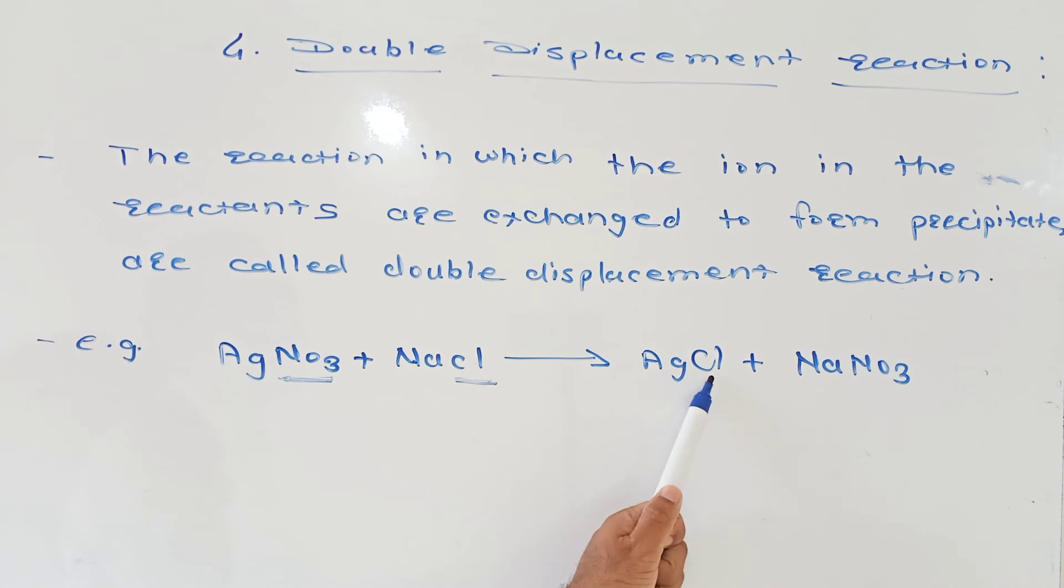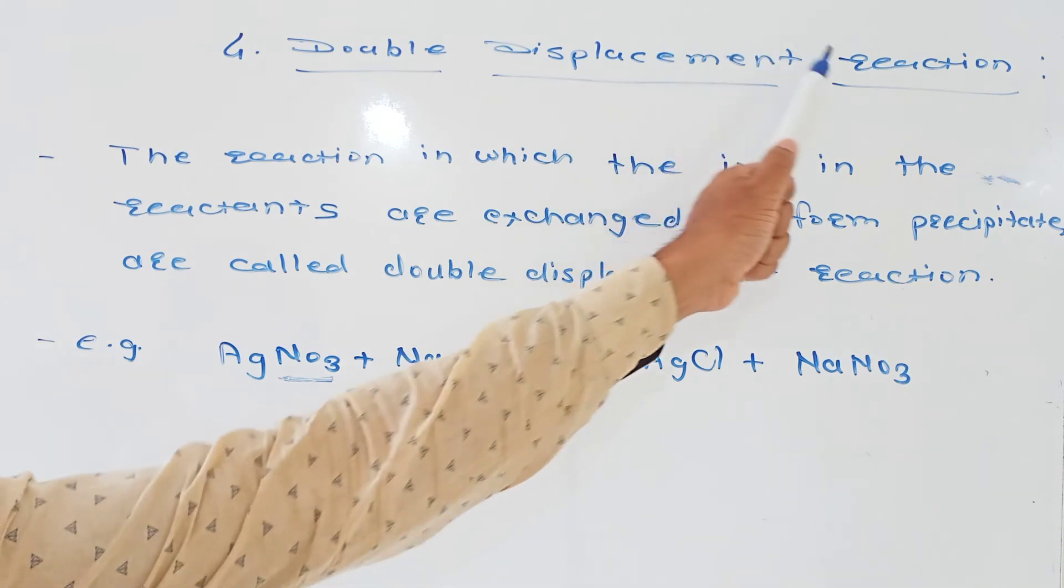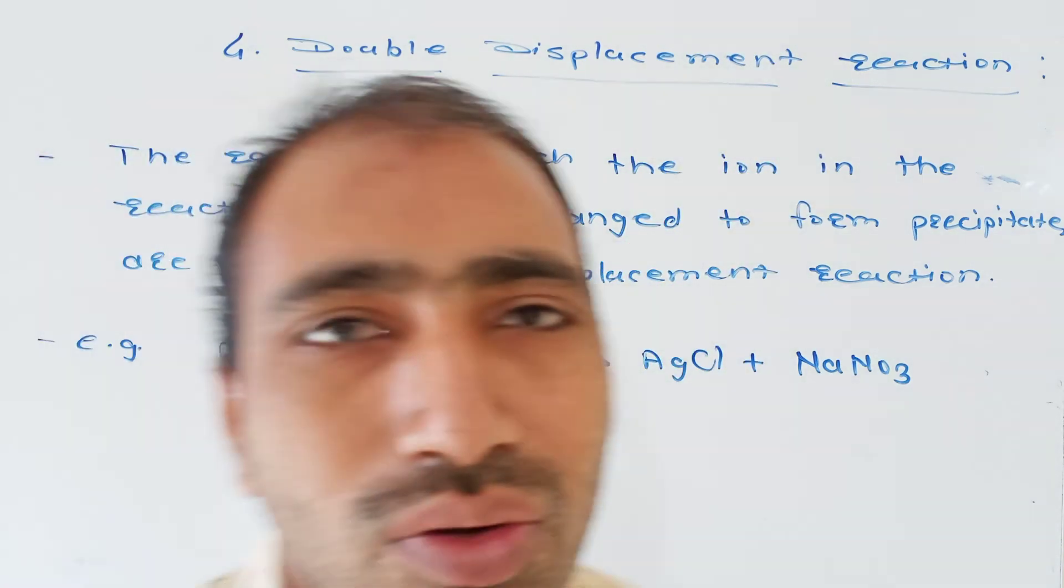For example, AgNO3 + NaCl gives AgCl + NaNO3. The Cl and NO3 are exchanged and this is white precipitate form and this reaction is Double Displacement Reaction.